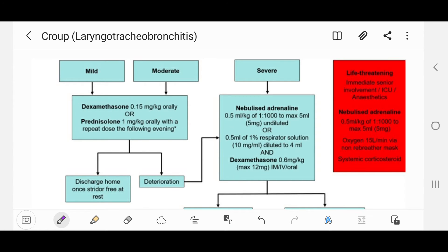This flowchart will present the treatment of croup in details. If a child presents with mild or moderate croup, we give dexamethasone 0.15 mg per kg orally or prednisolone 1 mg per kg orally with a repeat dose the following evening, and then we discharge the child home once they are stridor-free at rest.